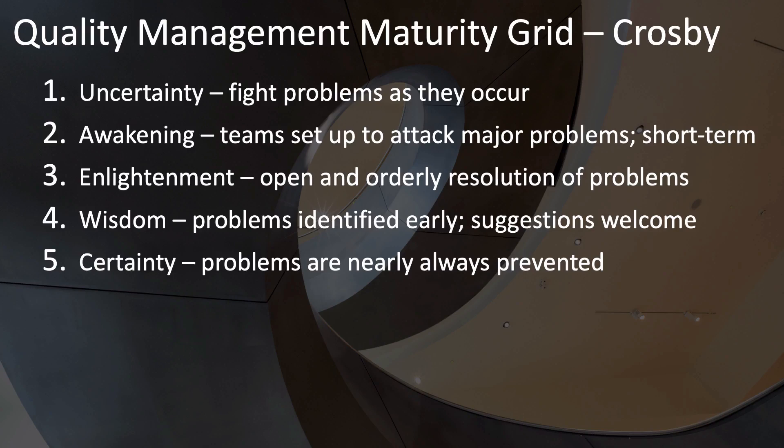The first level is uncertainty. In this case, problems are fought as they occur — there's no real long-term resolution, there's inadequate definition, and lots of yelling and accusations. The phrase Crosby uses to describe this level of maturity is: 'We don't know why we have problems with quality.'